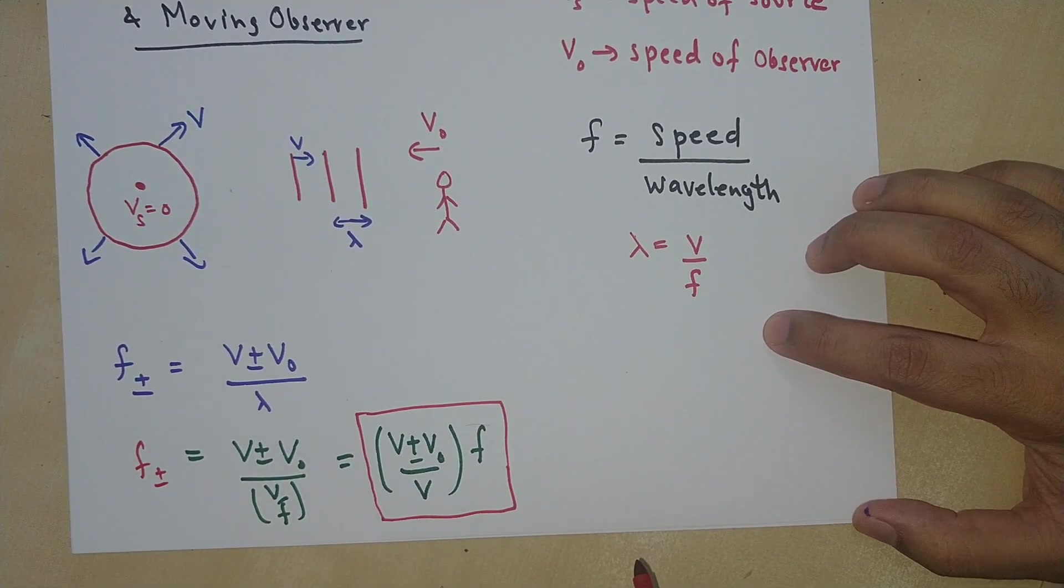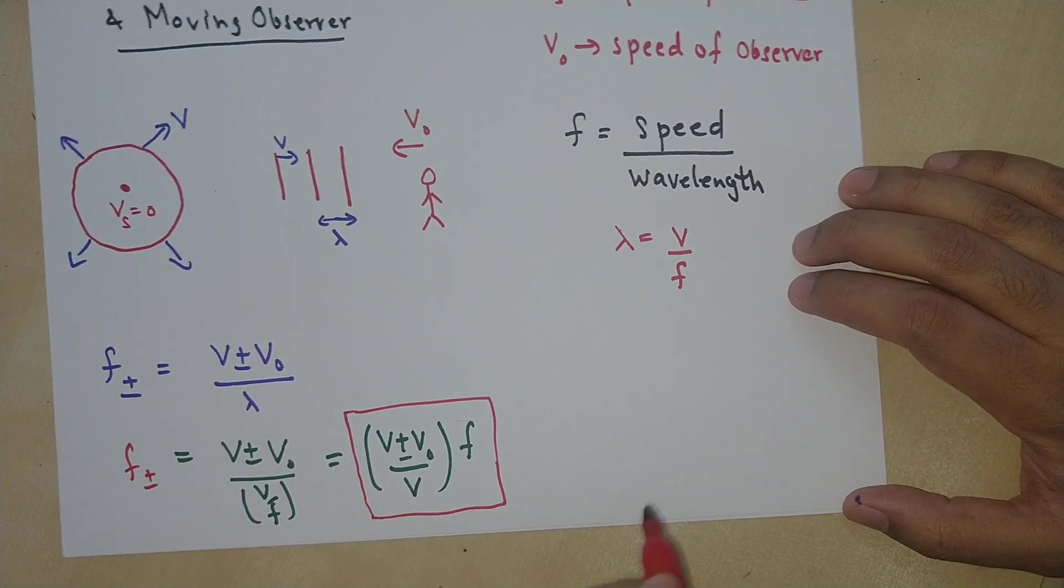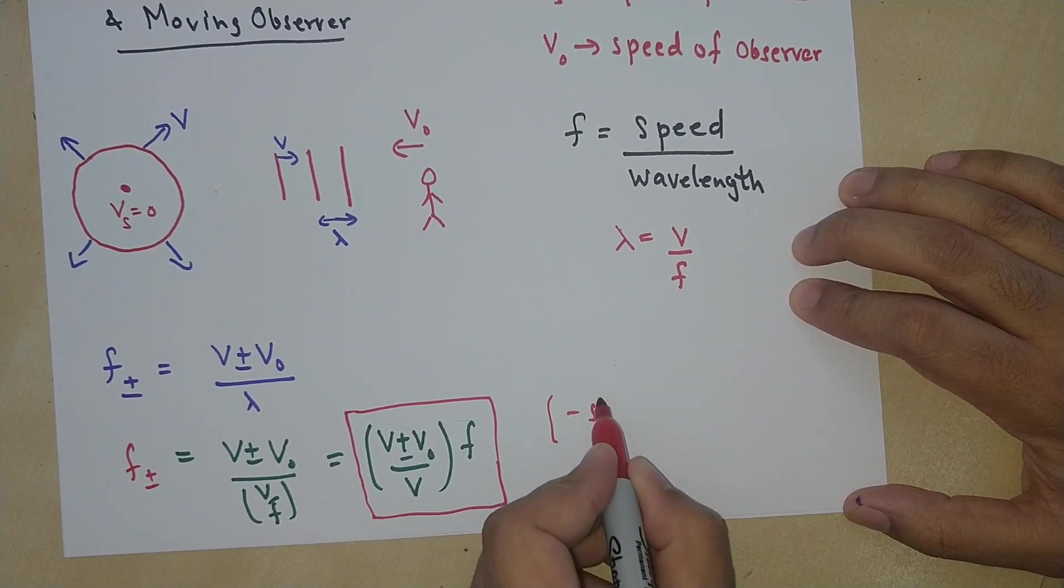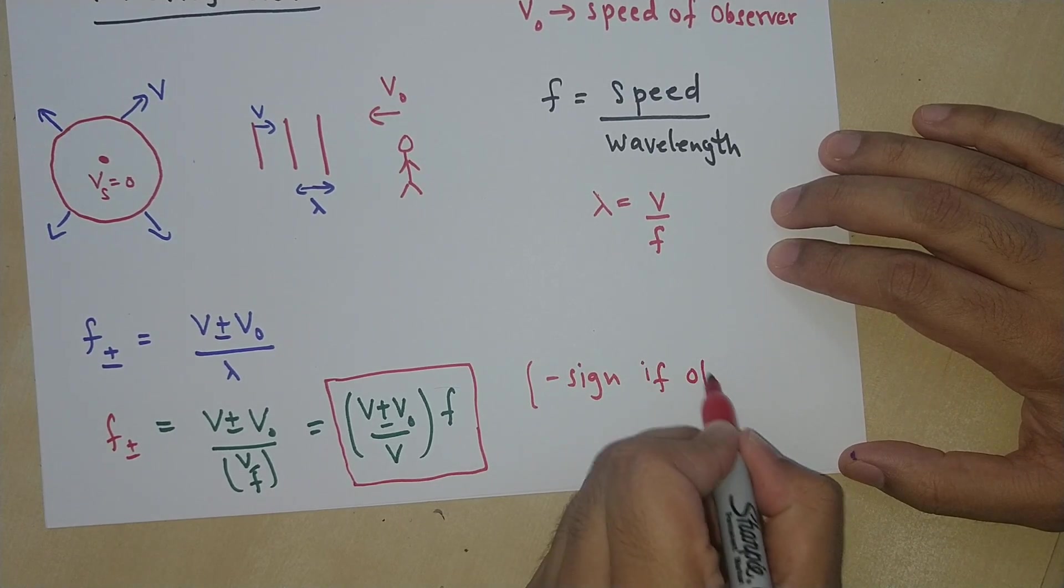So this is your F plus minus, the modified frequency. Remember the negative sign is when the observer is moving away.